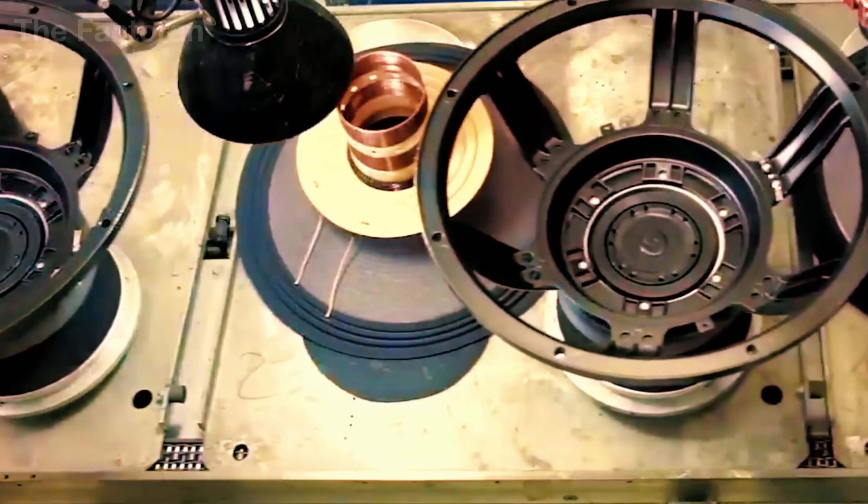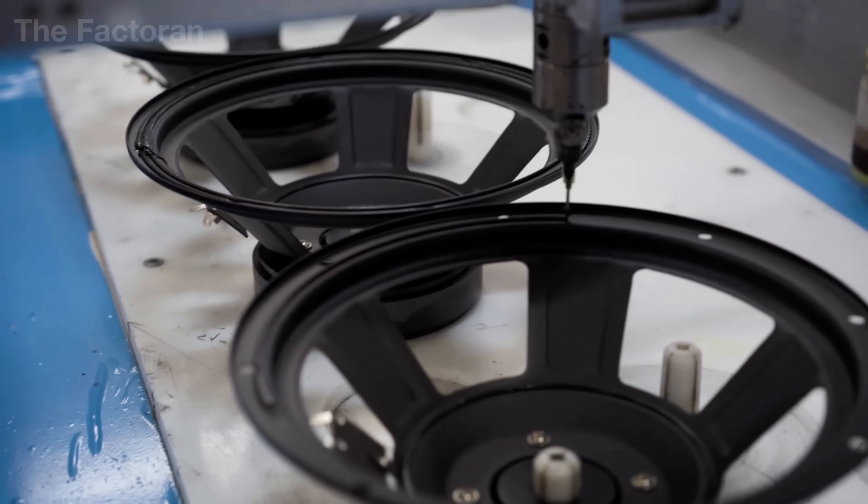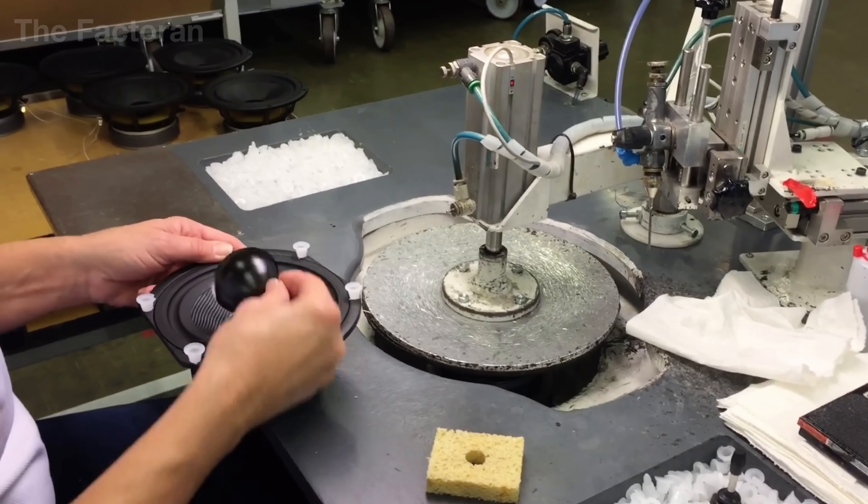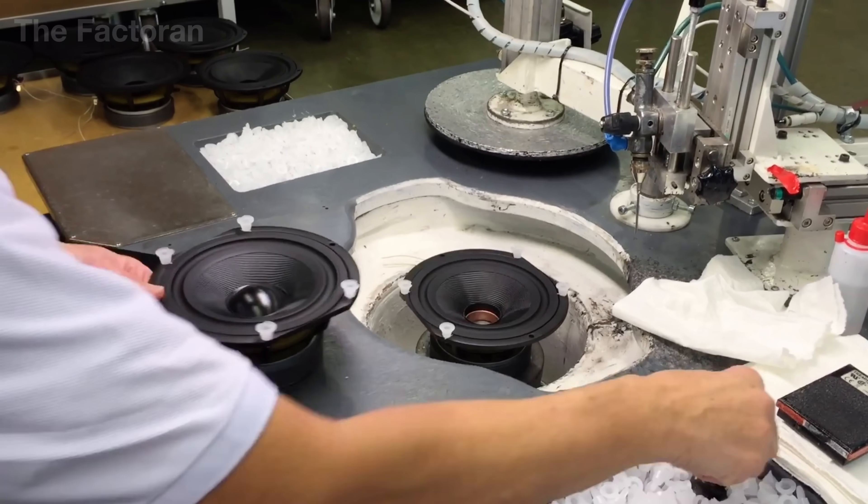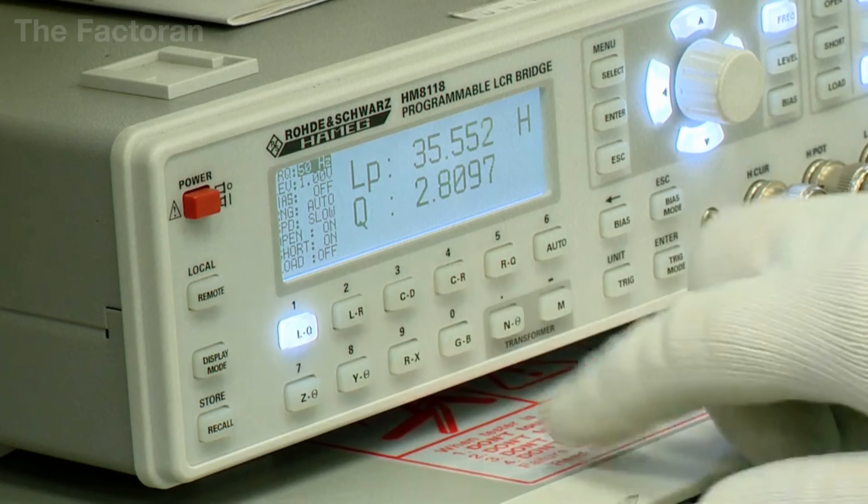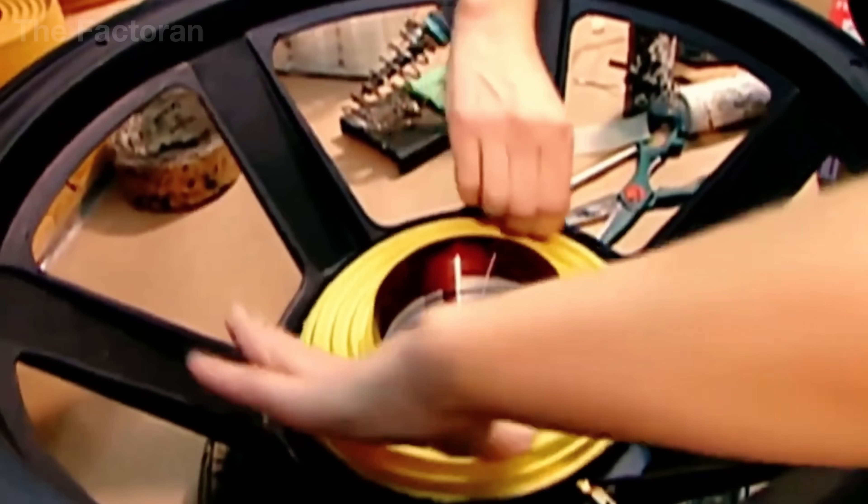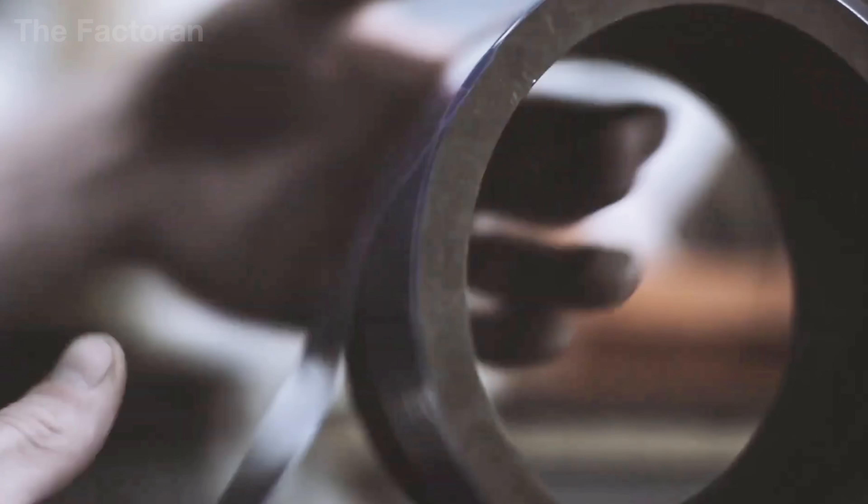The process begins with the coil being placed into the narrow magnetic gap between the magnet and pole core, where a deviation of only fractions of a millimeter can alter frequency response and sensitivity. Depending on the speaker design, the coil is mounted either by hand or by automated pick-and-place systems, then its leads are soldered to electrical terminals for connection.